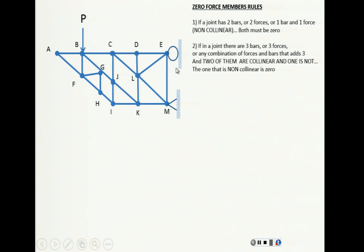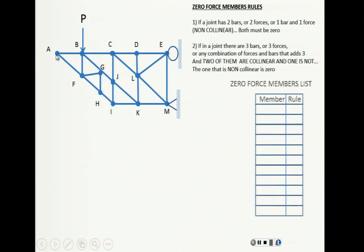Let's see how we can apply those rules to the solution of this problem. You have to look for anything that matches these rules. If you look at joint A — this joint here — let's check the rules. It says if a joint has two bars: one, two — two bars. And they are non-collinear. Both of them have to be zero.